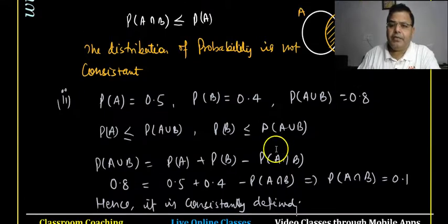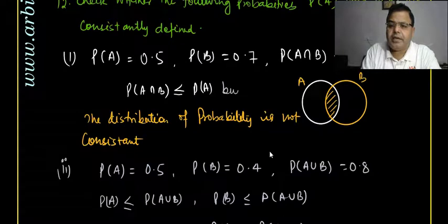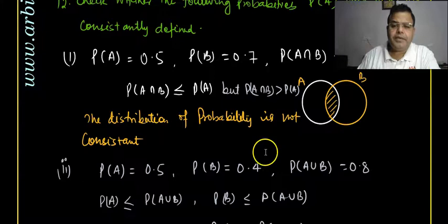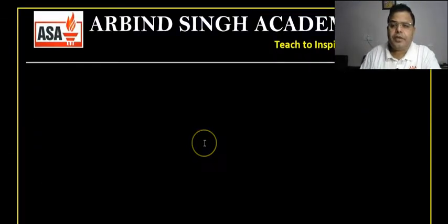The condition is that P(A ∩ B) must be less than both P(A) and P(B). In the first part P(A ∩ B) was greater than P(A), so it was not consistent. In the second part it is satisfied, so it is consistently defined.